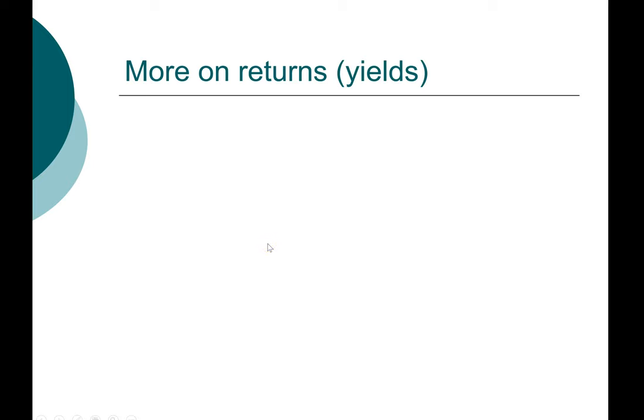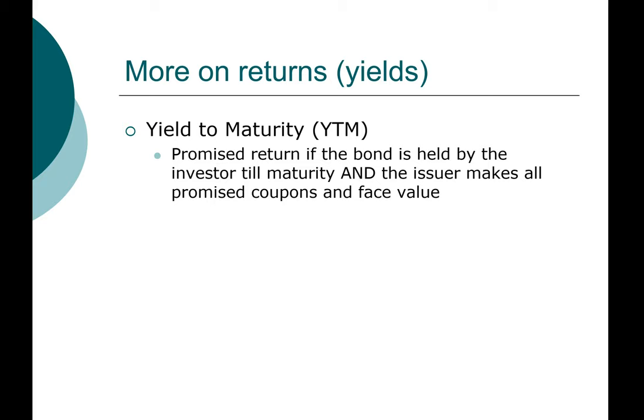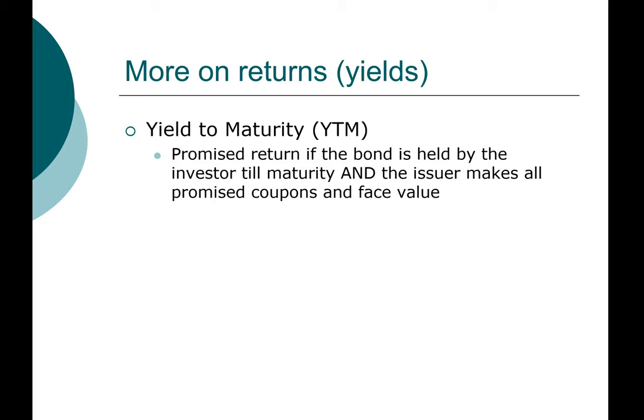For bonds, the investment is based on the price you pay for it today, which is the present value, and all the future cash flow. So the return that is oftentimes reported and cited on the bond is the yield to maturity. The yield to maturity, as we described earlier, is the promised return if the bond is held by the investor until maturity and the issuer makes all promised coupon payments and future face value.